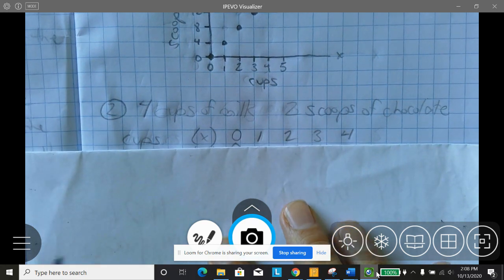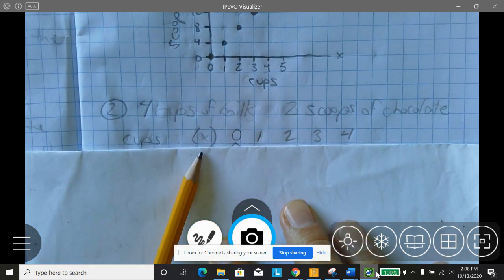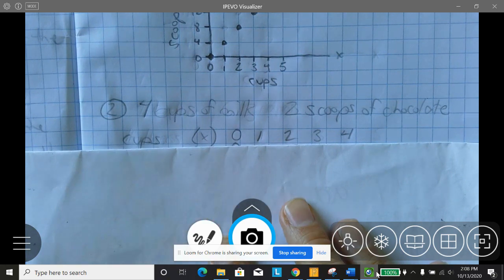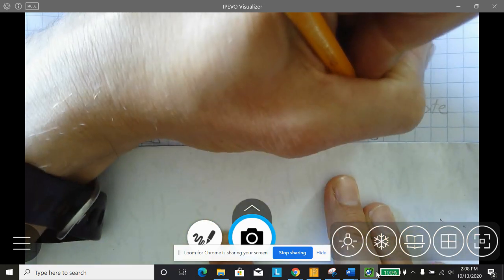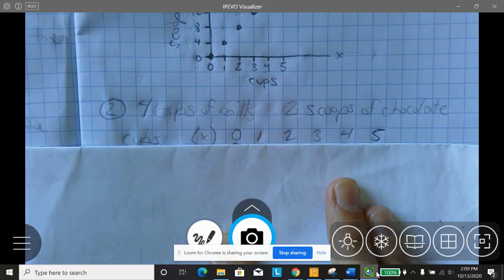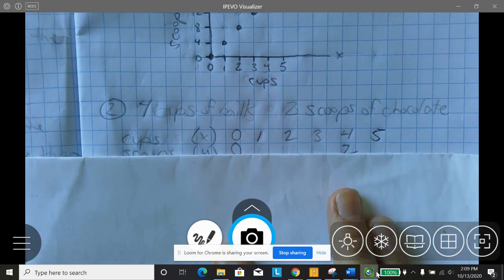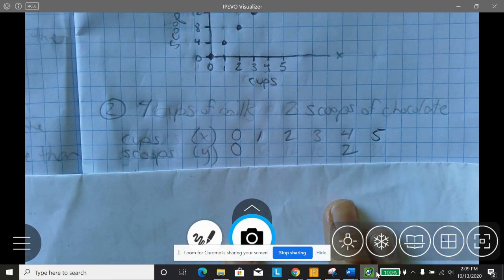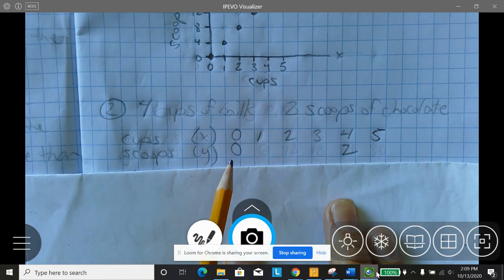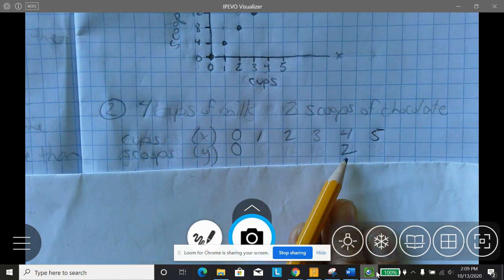So first, we're going to start off the same, right? We have cups of milk, which is our x value. That's our input. We're going to do zero, one, two, three, four, and five. Now, this is a little tougher, though, to figure out the scoops because I know that zero cups is going to give me zero scoops. And it tells me that four cups gives me two scoops.